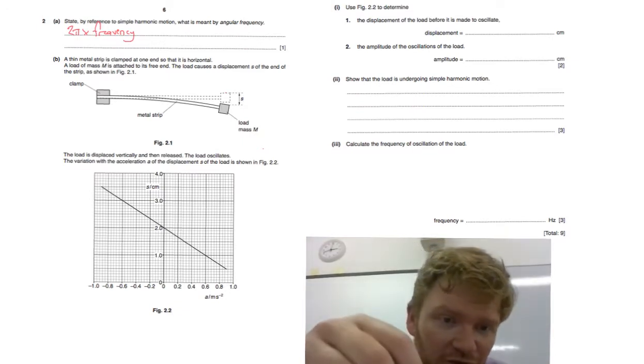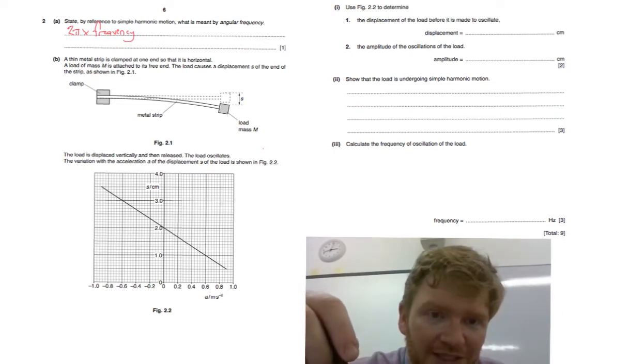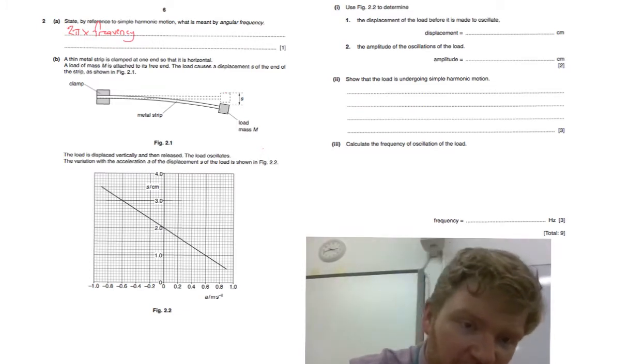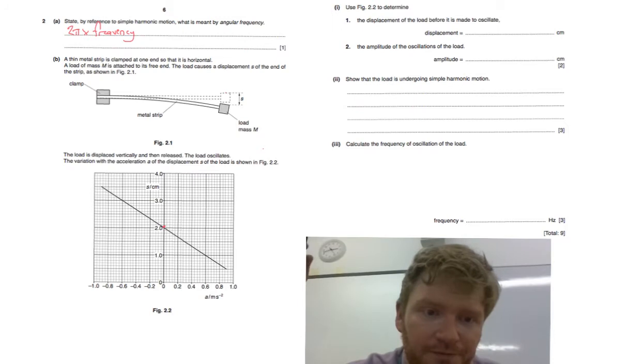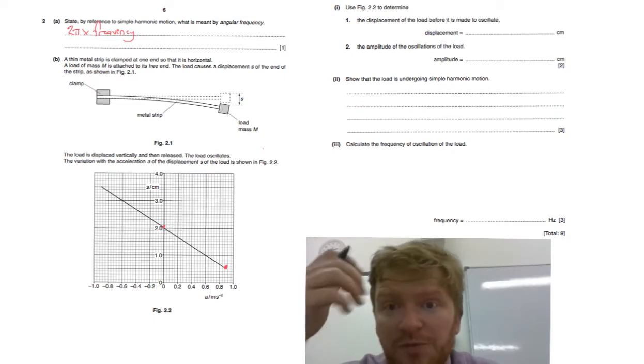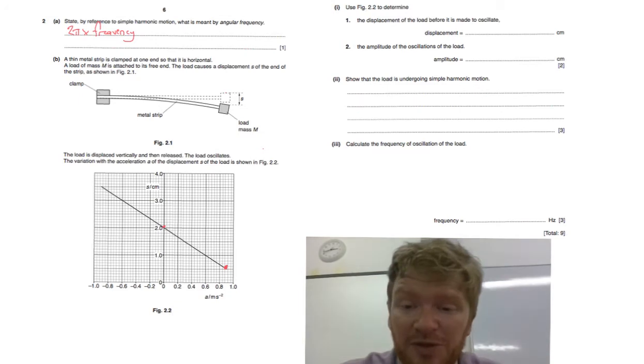So determine the displacement of the load before it is made to oscillate. So the displacement, when acceleration is zero, that will be its equilibrium point. And then we're saying how far is it displaced downwards like that. Before it made to oscillate, that will be the equilibrium point. So that will be 2.0 centimeters.